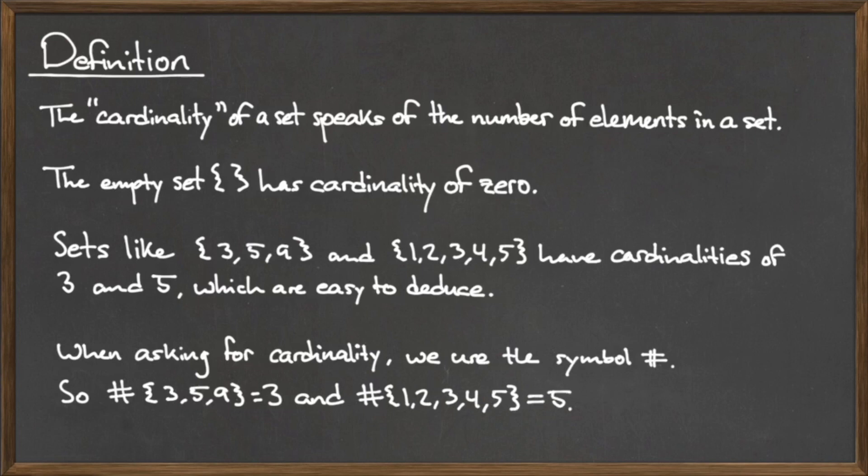Similarly, the set containing the elements 1, 2, 3, 4, and 5 has cardinality 5, since this set contains 5 elements.